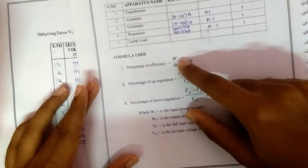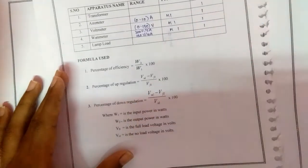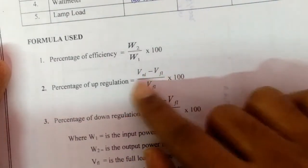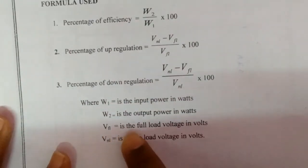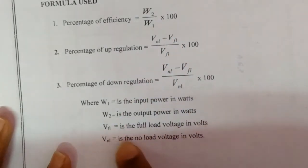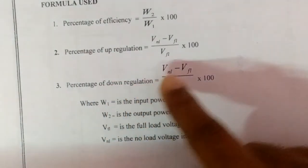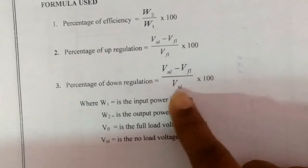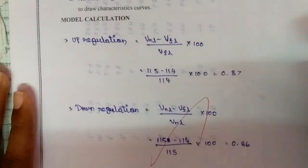The formula for efficiency will be output power by input power into 100. For up regulation, the formula will be VNL minus VFL by VFL into 100, where VFL is the full load voltage in volts and VNL is the no-load voltage in volts. And the percentage of down regulation will be VNL minus VFL by VNL into 100.